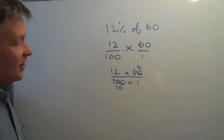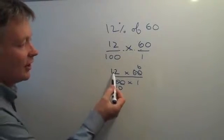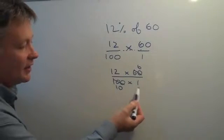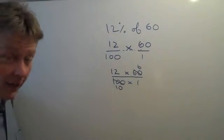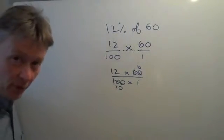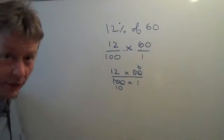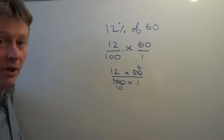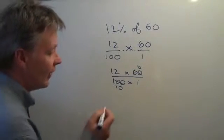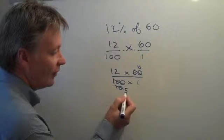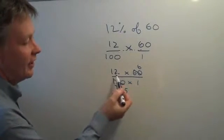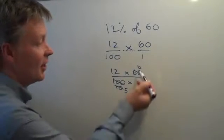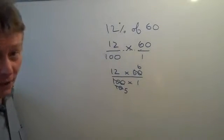So I now have a fraction which looks like 12 times 6 divided by 10 times 1. Well again, I can make my numbers smaller and easier to deal with. So I'm going to divide the top and the bottom by 2. If I do that, this 10 becomes 5. And I can either divide the 12 by 2 and it becomes 6, or the 6 by 2 and it becomes 3.